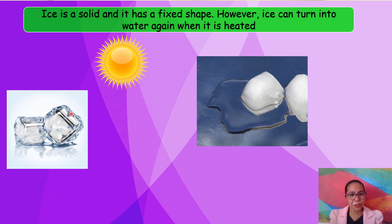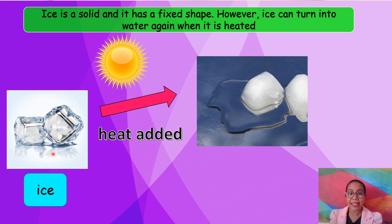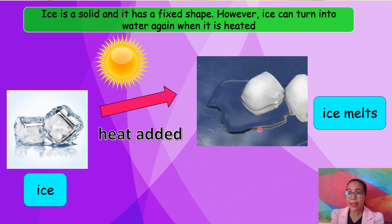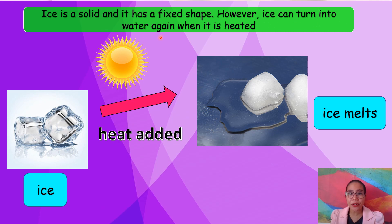Do you know what this is? This is ice. It's solid. It's hard. But when heat is added, what will happen to the ice? The ice melts. Ice is solid and it has a fixed shape. However, ice can turn into water again when it is heated.